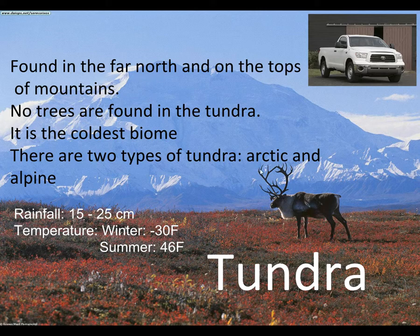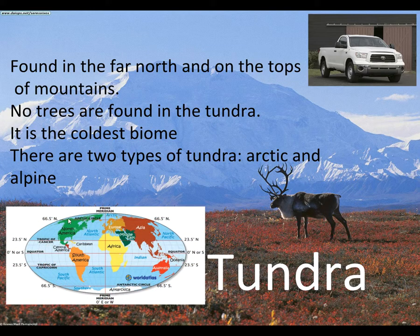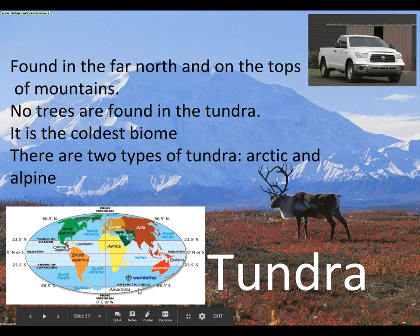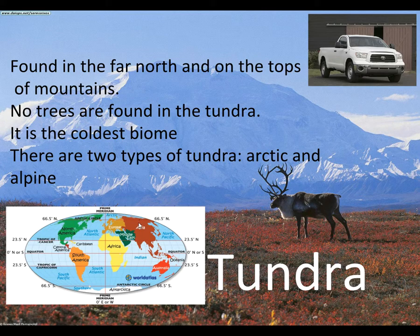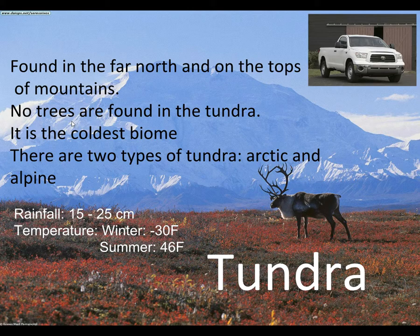The ones in the far north are called the Arctic tundra, based on where it is on the map. The Arctic Circle is up in the extreme north — similar to how we have the Tropic of Cancer and Capricorn, we also have an Arctic Circle. If you see a tundra biome up in the far north, that is the Arctic tundra. And the defining characteristic: there are zero trees found in the tundra.